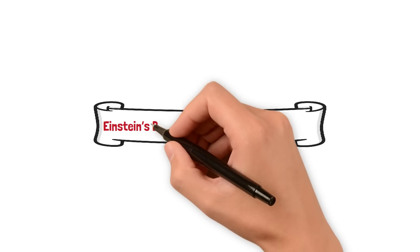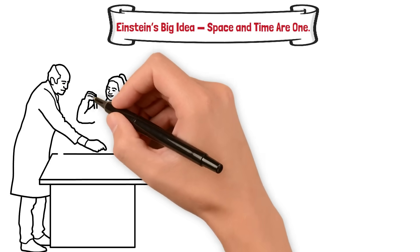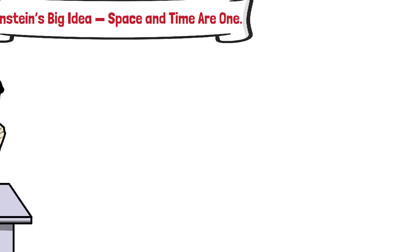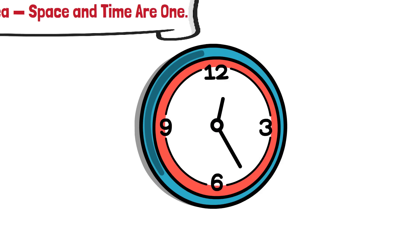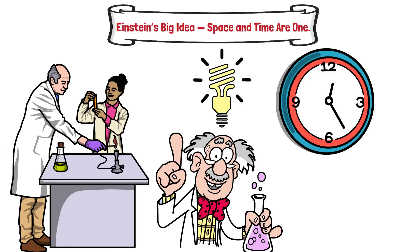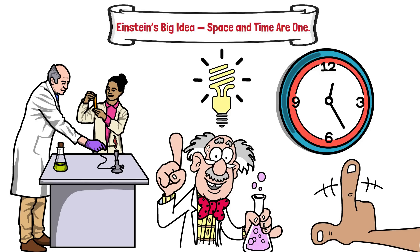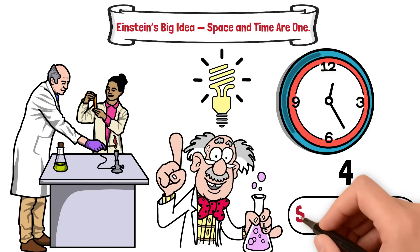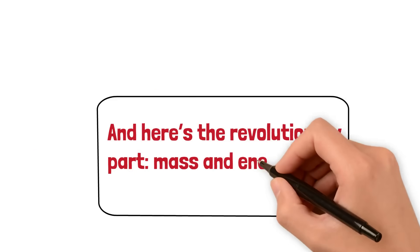Einstein's Big Idea: Space and Time Are One. Before Einstein, physicists viewed space as an invisible stage and time as a constant clock ticking everywhere at the same rate. But Einstein turned that idea upside down. He proposed that space and time are not separate, they're woven together into a single, four-dimensional fabric called space-time. And here's the revolutionary part: mass and energy can bend that fabric.